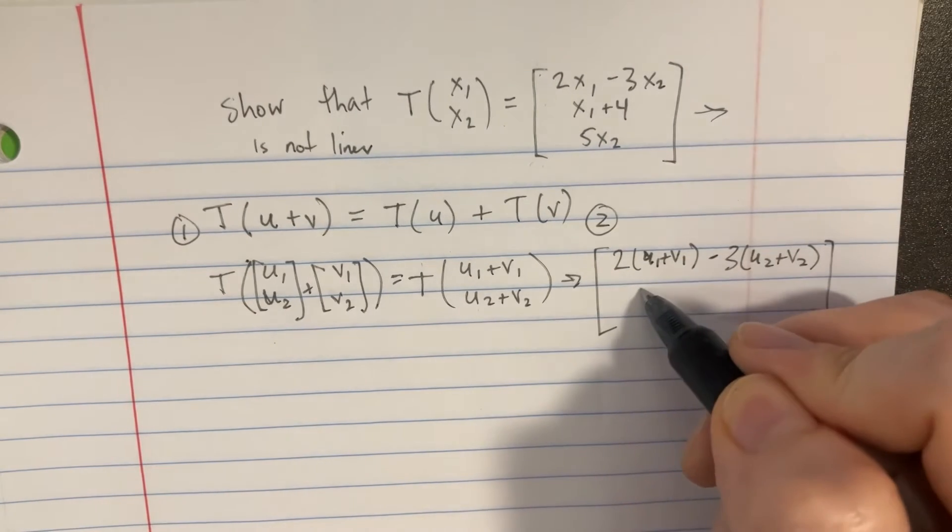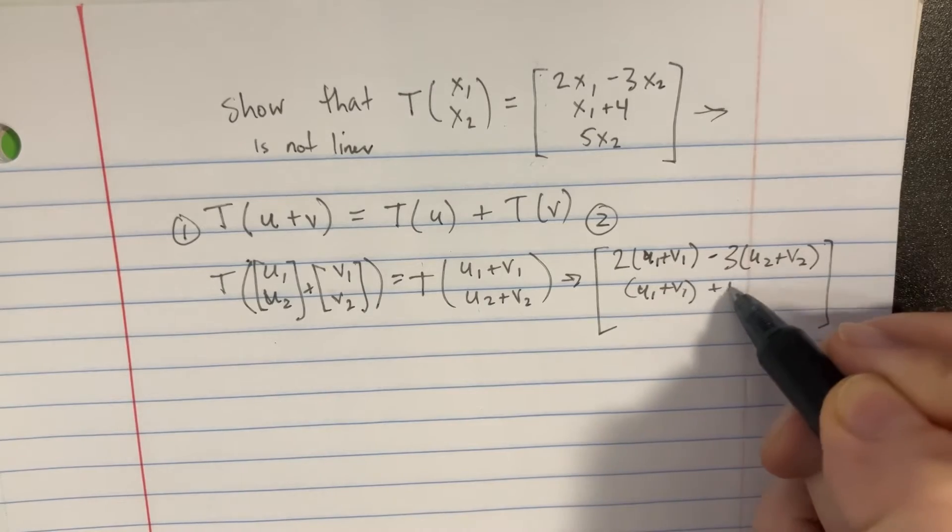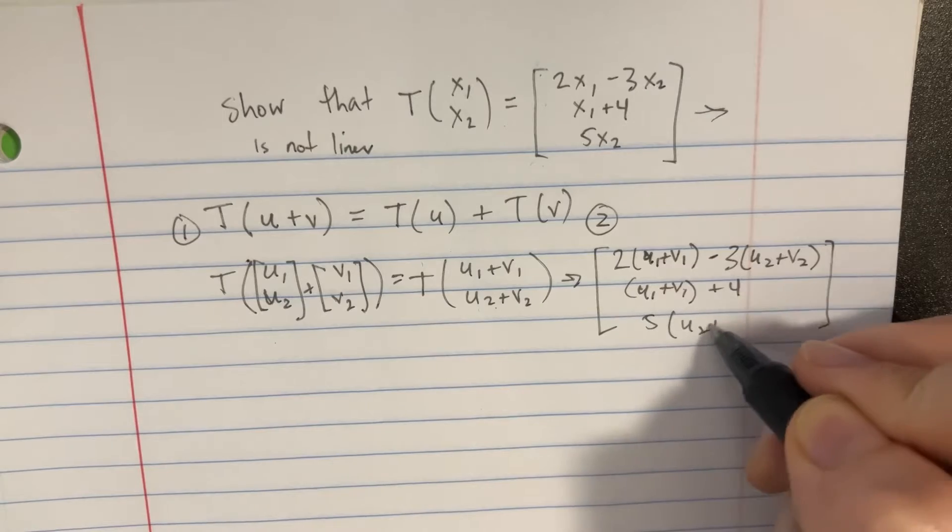And then we got X1 being here, so we'll put in U1 plus V1, and then we have plus four, and then we can go five times the X2, which is U2 plus V2.